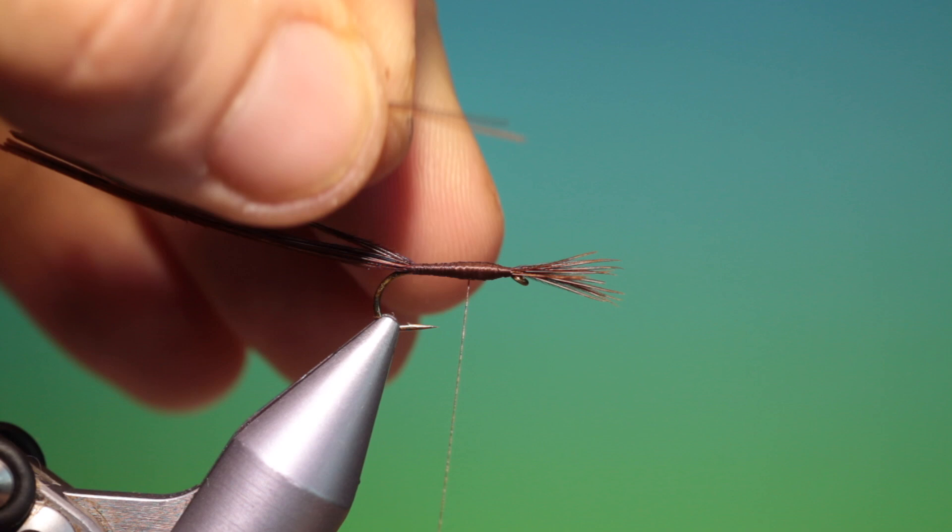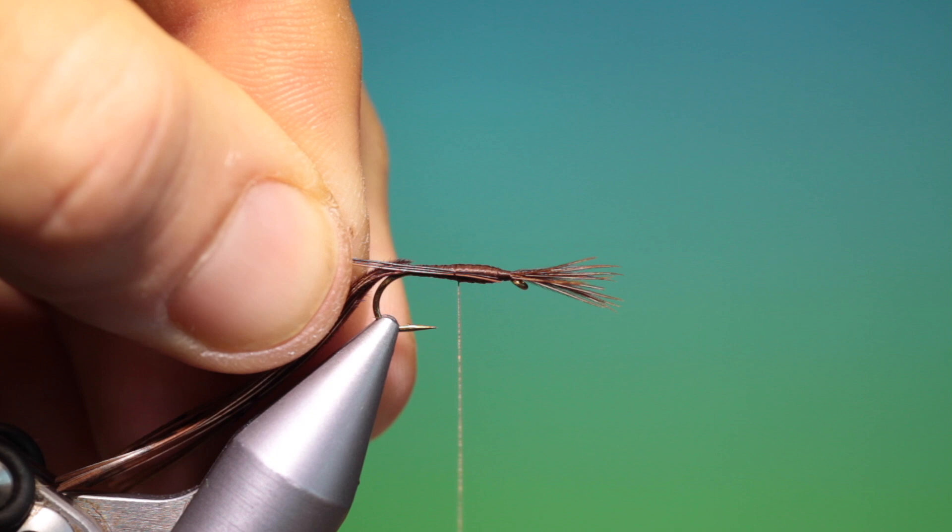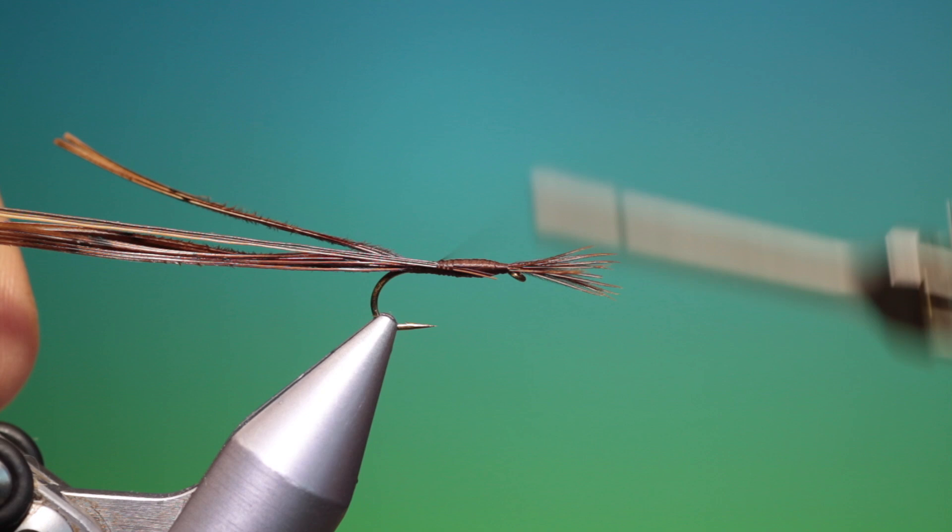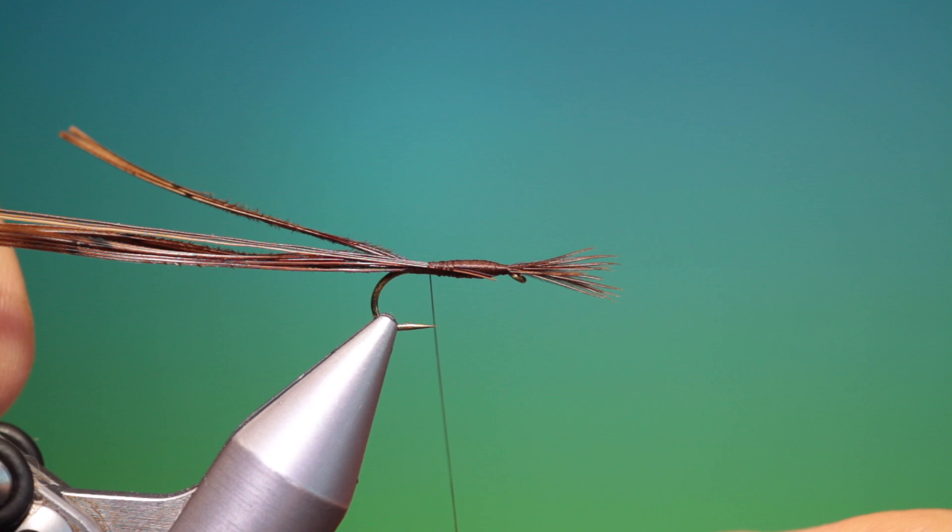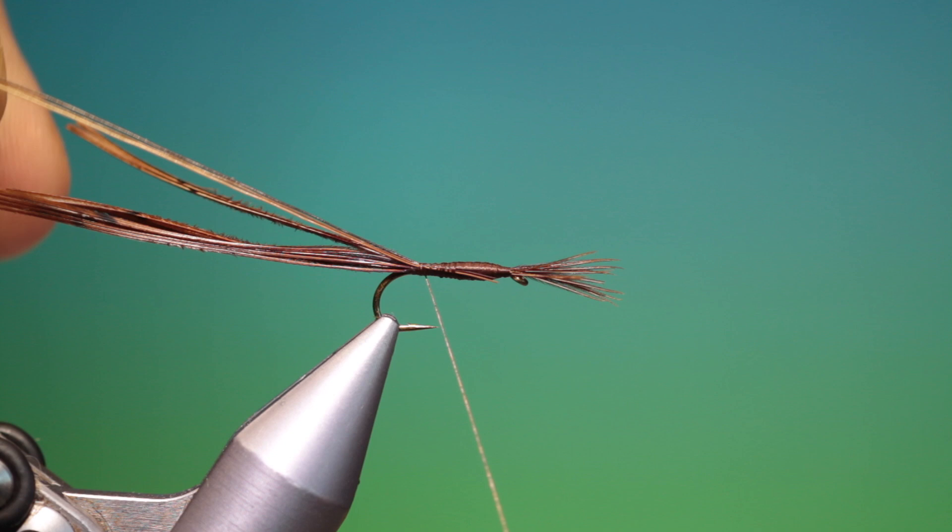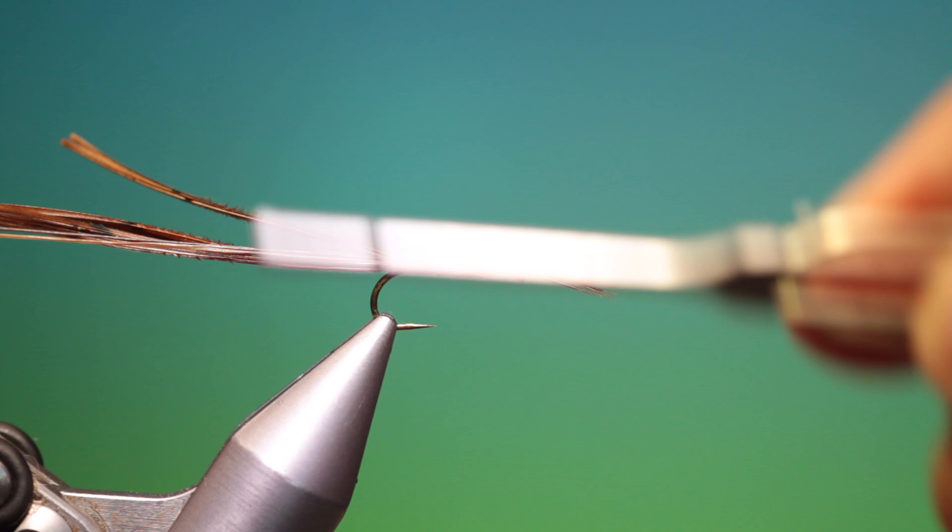I've got two brown and one black moose mane hairs, and we just attach those and then we go back. Remember to keep your tying thread with a flat profile. Go right back into the pheasant tail and then we can go forward again over the whole body.